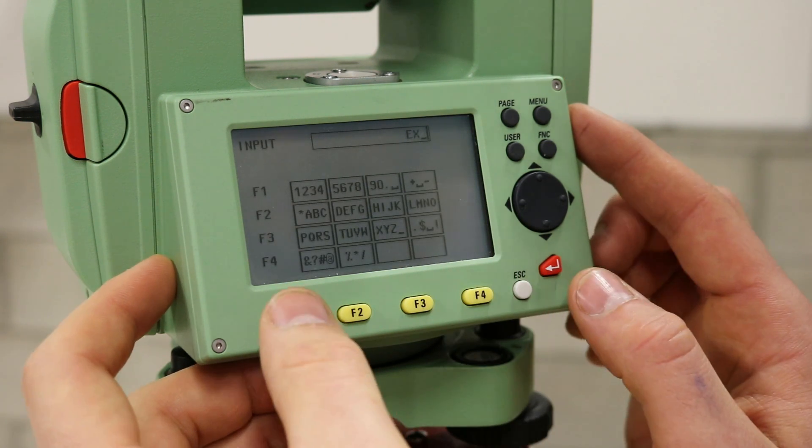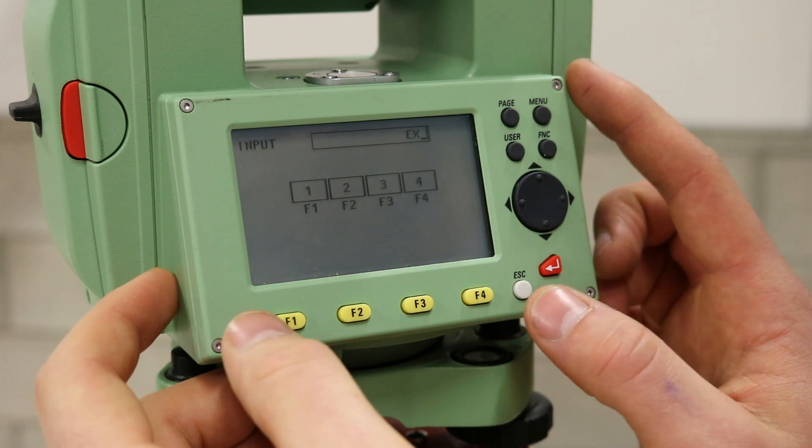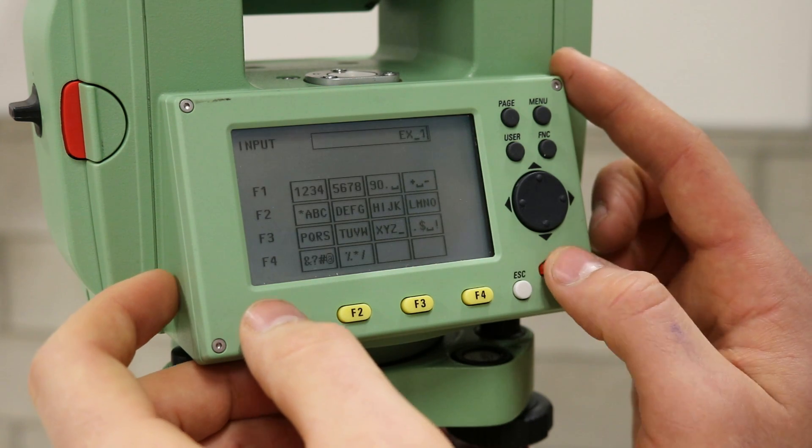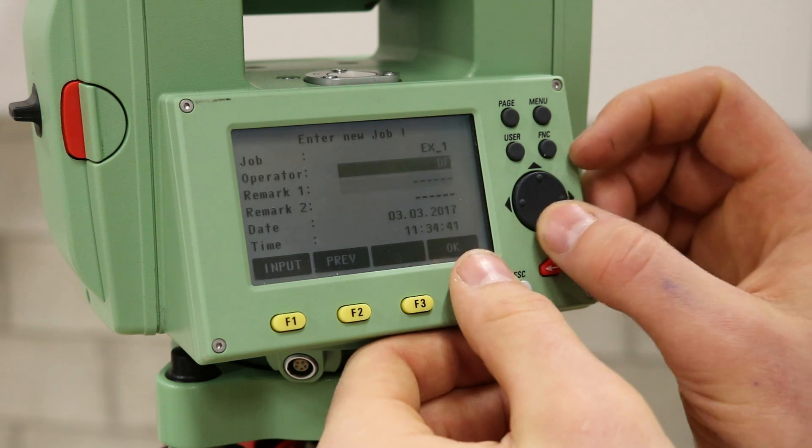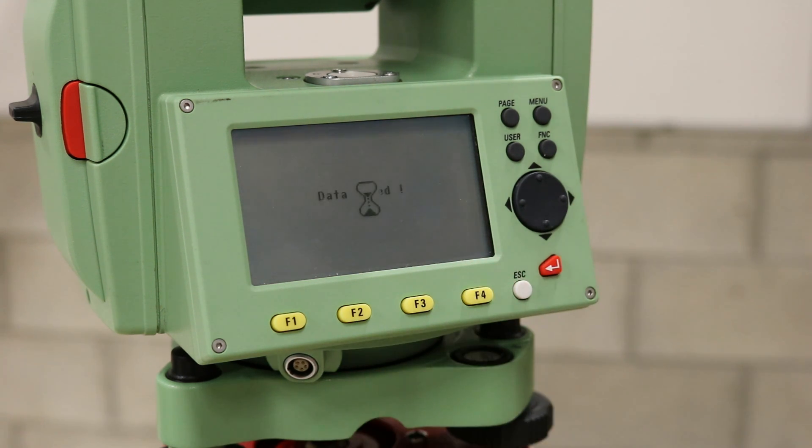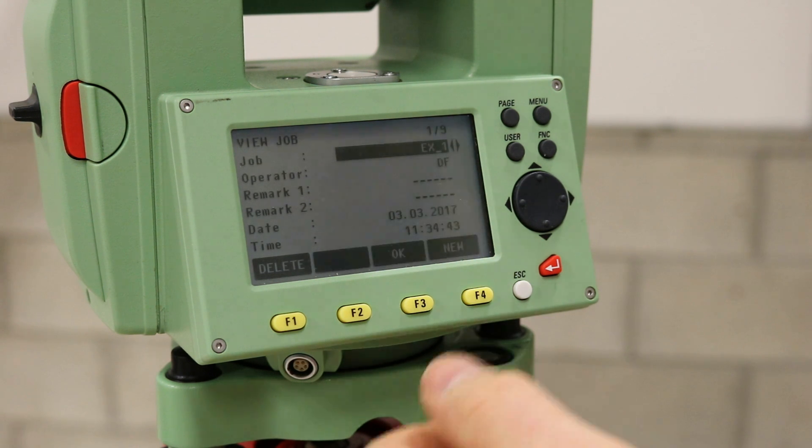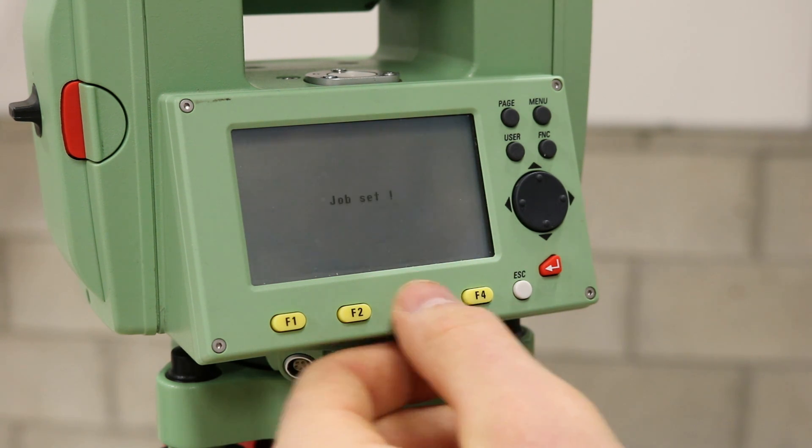Choose a job name, such as example 1, and press the enter key to confirm your selection. Enter a relevant operator name. Convention is to enter initials, such as DF, in this section. Once this is done, press the OK function key to confirm the job details.